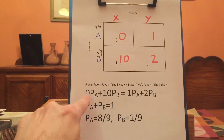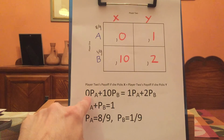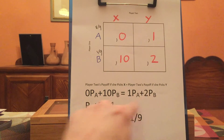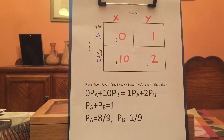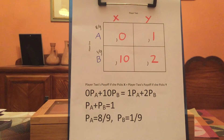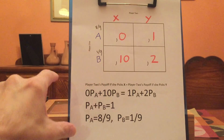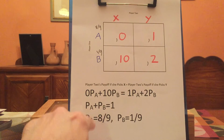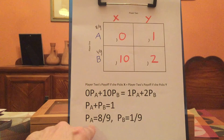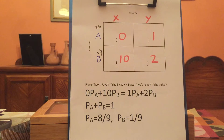So player two is willing to randomize — meaning she's willing to play a mixed strategy — if this equation holds. We also know that the sum of the probabilities for a player has to be one; the sum of everything you might do has to be one. Two equations, two unknowns — we put them together and solve using high school algebra. We get p-sub-a equal to eight ninths and p-sub-b equal to one ninth.